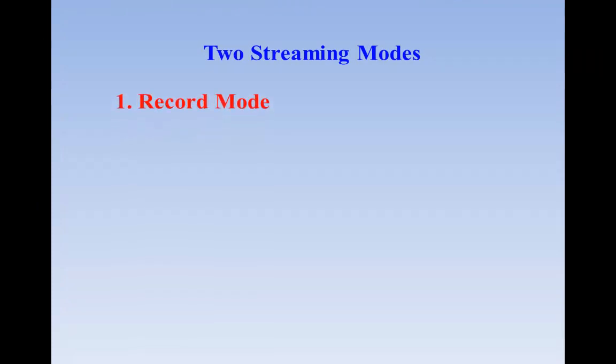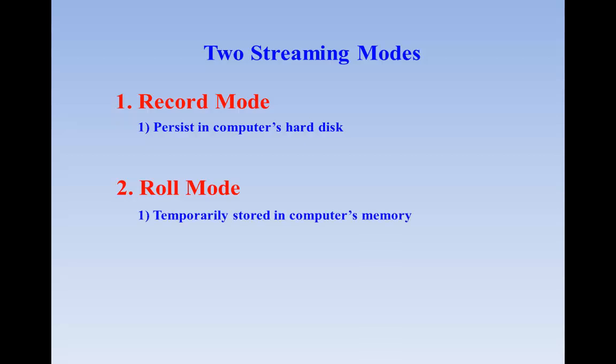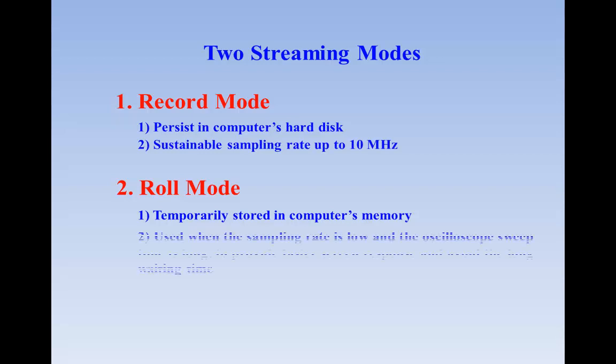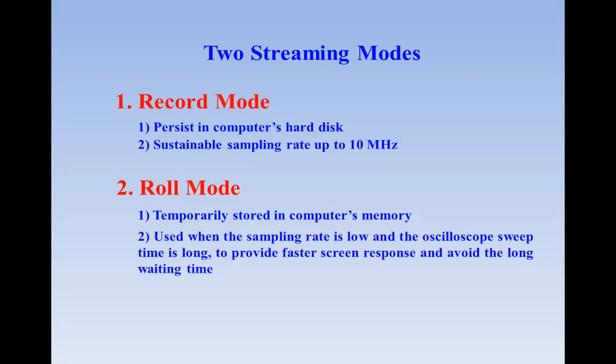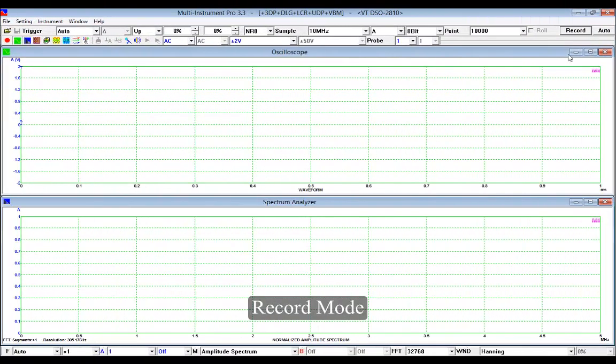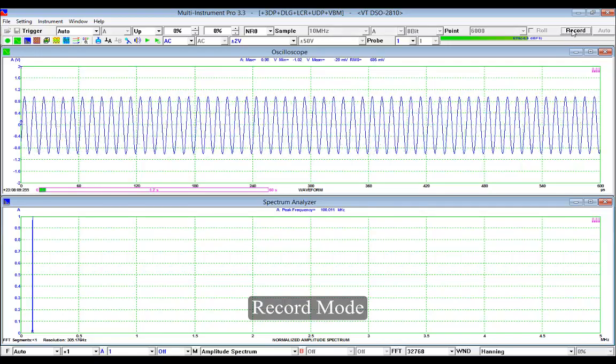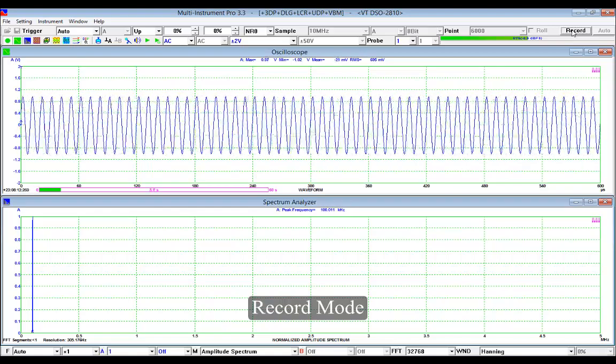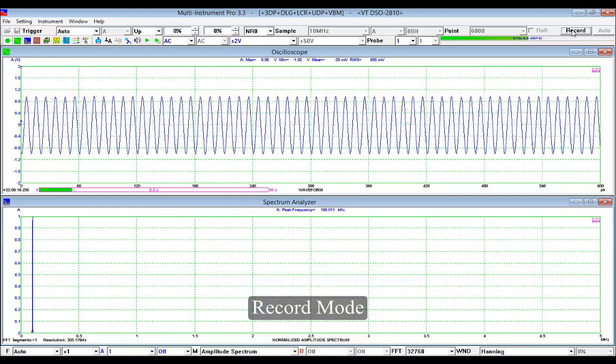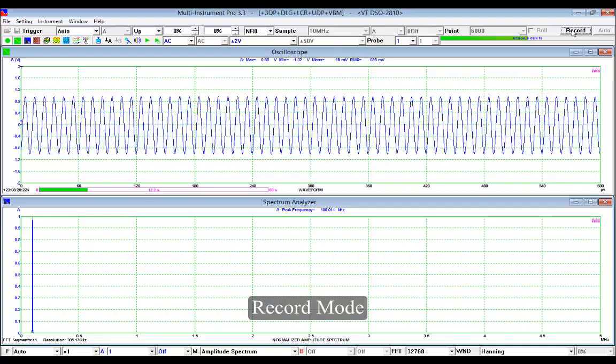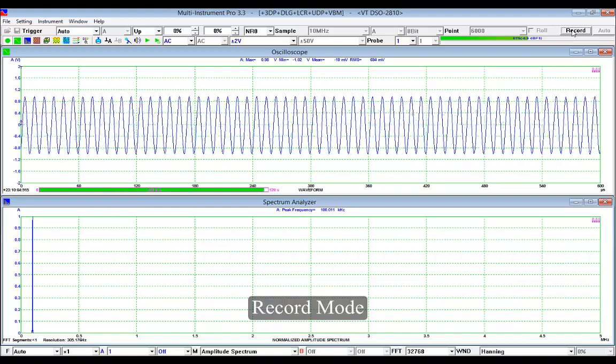In Multi-Instrument there are two streaming modes: record mode and roll mode. Record mode uses the computer's hard disk to persist the continuously sampled data, while roll mode uses the computer's memory for temporary concatenation. The maximum sampling rate sustainable in record mode for the second-generation VT DSOs is about 10 megahertz. Here is an example of recording a 100 kilohertz sine wave at 10 megahertz and 8-bit under record mode. The progress bar at the lower left corner shows the recording progress. A green bar without any red chunk would mean that the data recorded is continuous.